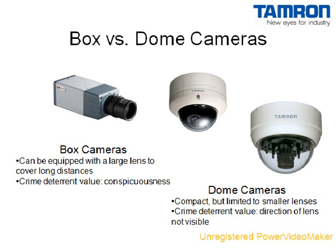There are two main types of cameras: box cameras and dome cameras. Box cameras are not restricted in the size of the lens and can be equipped with long-range lenses to cover long distances. This is an important consideration in outdoor applications. Box cameras are generally large and conspicuous, providing added crime deterrent value to your security system.